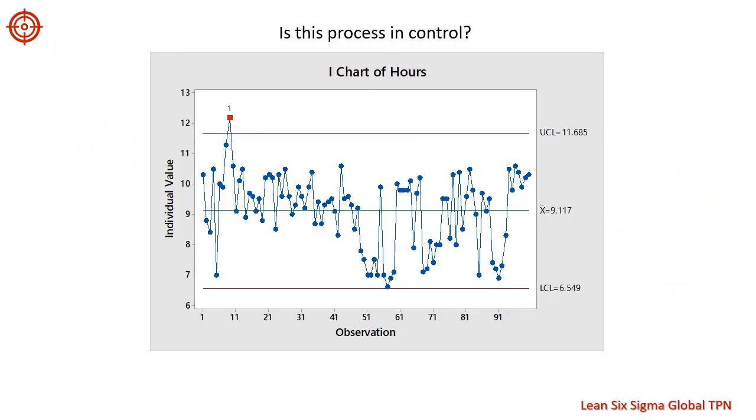So is this process in control? We can see this point is outside of the control limits, which indicates that the process is out of control. This contract took an exceptionally long time to complete. When we find evidence of special cause variation in a process, we should investigate this point to find out why it happened.